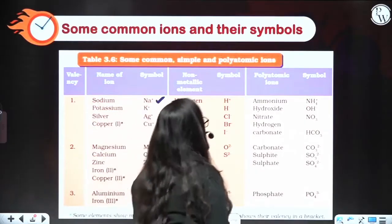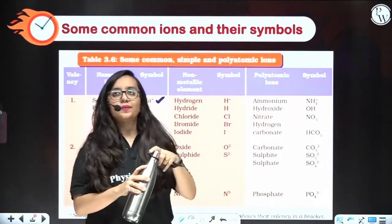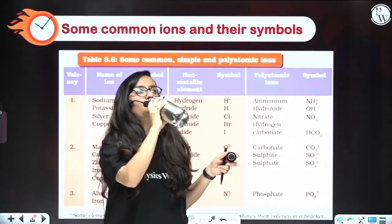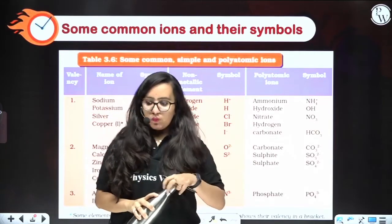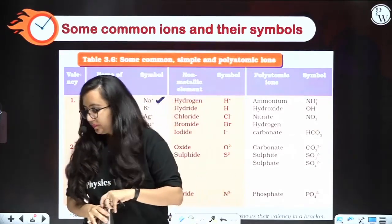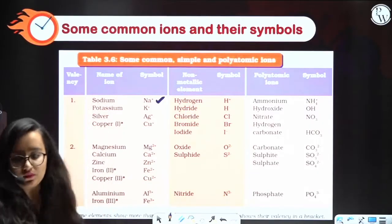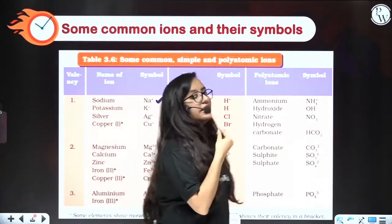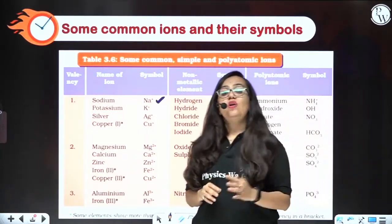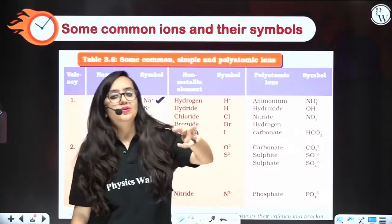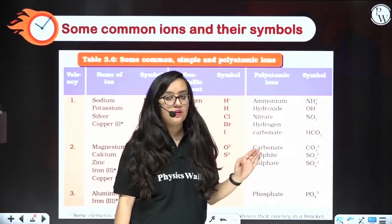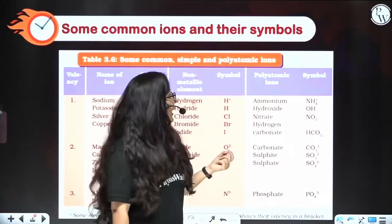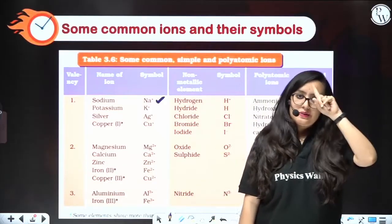When talking about polyatomic ions, we talk about the ion as a whole. For example, ammonium is one nitrogen and four hydrogen atoms — we take it as a single entity, and the charge of the ammonium ion is plus 1.